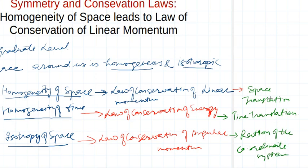Any physical quantity under space translation will remain invariant. Similarly, any physical quantity under time translation remains invariant. And rotation of the coordinate system leaves the physical system invariant. These three things lead to three different conservation laws — that is what we will discuss here.